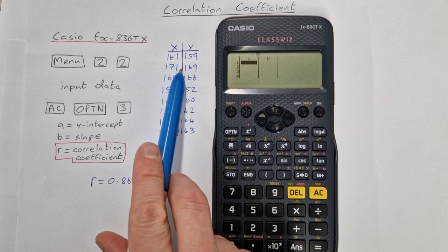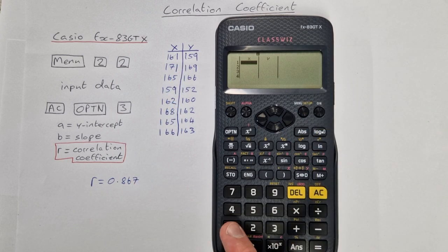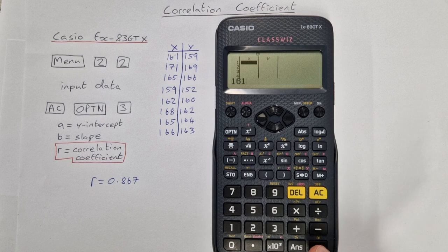Here's the data that I'm going to input. So you start with the x column, we'll say 161, and then you press equals to input that bit of data.